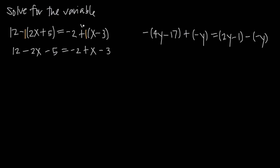When you have a plus sign, whatever's inside your parentheses stays the same, because multiplying by positive 1 isn't going to change that value at all. So we started with positive x minus 3 and ended up with positive x minus 3. But when you have a negative sign, like we did here, it's going to change the sign on everything inside the parentheses. So instead of positive 2x and positive 5, we ended up with negative 2x and negative 5.